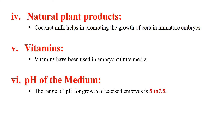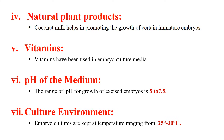The next requirement is pH. The pH of culture media for embryo culture should be between 5 to 7.5. The culture environment — the temperature for incubation — should be between 25 to 30 degrees Celsius. These culture conditions are species-specific; these are general conditions, but they can be varied according to the species being cultured.